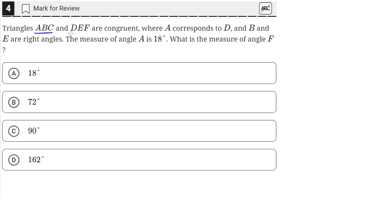Triangles ABC and DEF are congruent, where A corresponds to D, and B and E are right angles. The measure of angle A is 18 degrees. What is the measure of angle F?